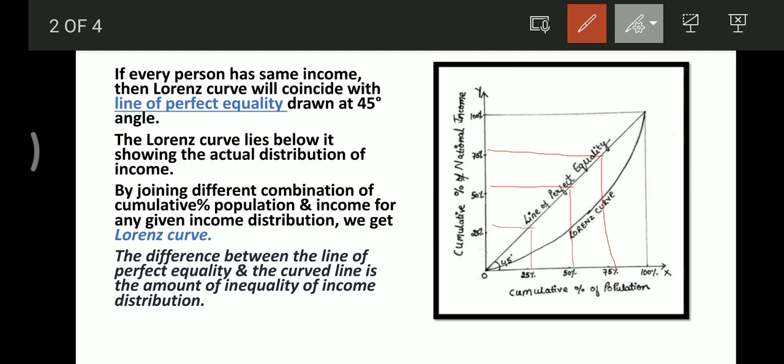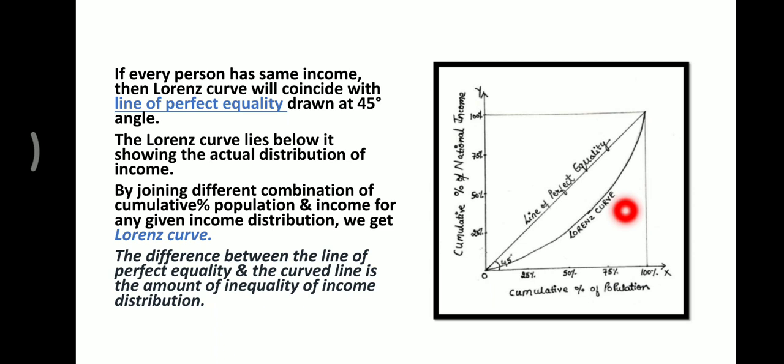This curve is your Lorenz curve. If we have some data of population and income and we join the different combinations of cumulative percentage of population and income for any given income distribution, we get this Lorenz curve.